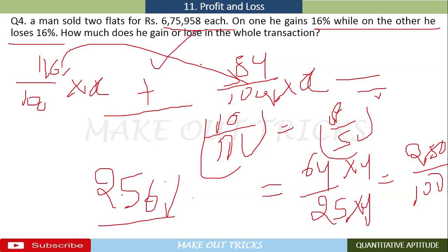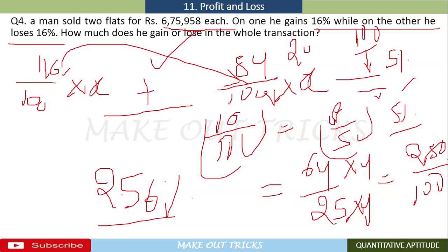To clarify with a simple example: if an article costs 100 rupees and one is sold at 5% gain (= 105 rupees) and another at 5% loss (= 95 rupees), the total is 200 rupees. The combined cost was also 200 rupees, but the percentages work differently — this will be explained further in upcoming problems.